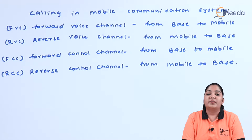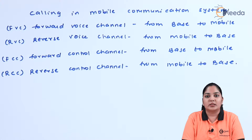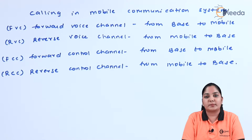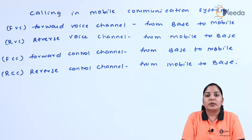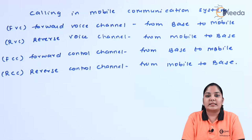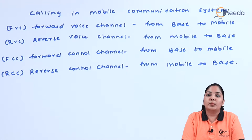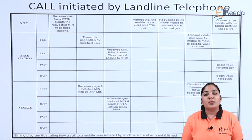The first channel is the forward voice channel, used for communicating voice signals from base station to mobile station. The second is the reverse voice channel, used for transmission of voice messages from mobile station to base station. We also have two control channels: the forward control channel, used for sending control messages from base station to mobile station, and the reverse control channel, used for sending control messages from mobile station to base station.